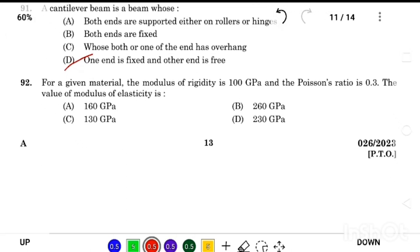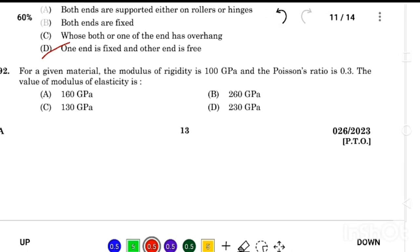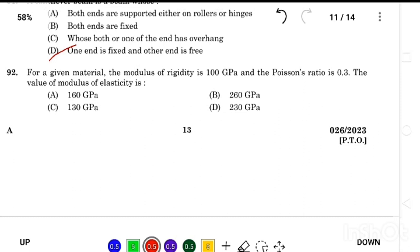For a given material, the modulus of rigidity is 100 GPa and the Poisson's ratio 0.3. The value of modulus of elasticity is Answer Option B, 260 GPa.